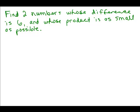Let's try this puzzle. Find two numbers whose difference is 6 and whose product is as small as possible. What does that mean? That means we want two numbers so that when you subtract them you get 6, which means they're 6 away from each other. But we also want to make sure when you multiply them together their product is as small as possible.